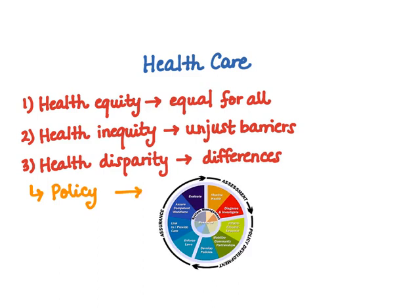I've pulled up an image here showing the three core functions of public health: assurance, assessment, and policy development, along with ten public health services. To simplify, I'll pull up another image that breaks down just the three core functions. Health disparities specifically are what help us determine how policy is going to be created, implemented, developed, and evaluated within differing populations.